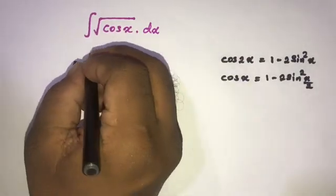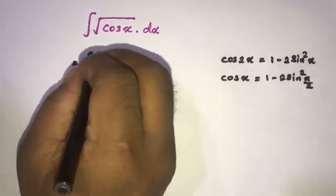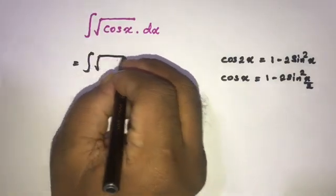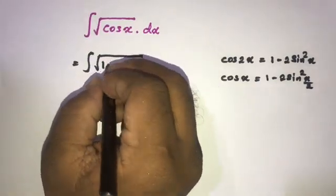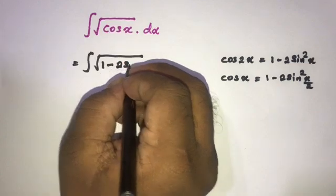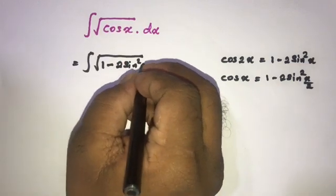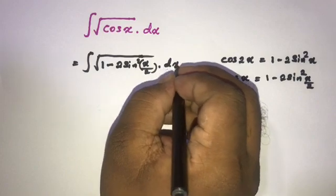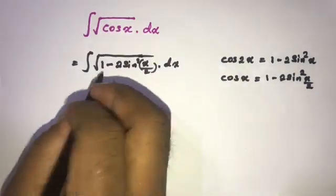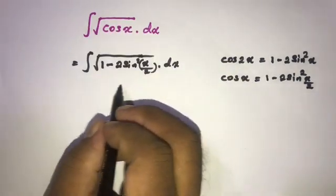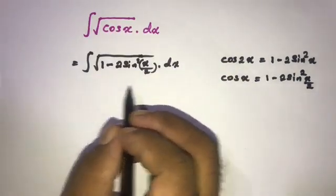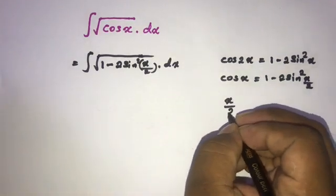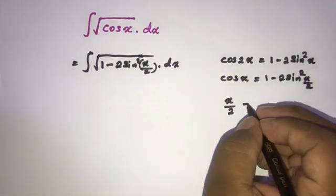Now we can rewrite our integral as the square root of 1 minus 2 times sine squared of x over 2, dx. From here we can use the substitution method.